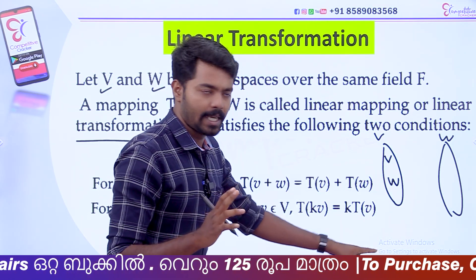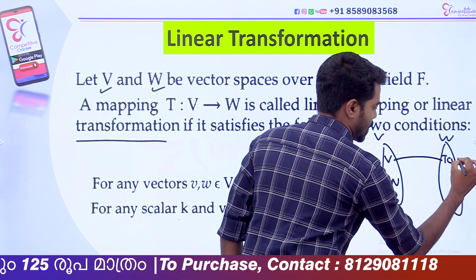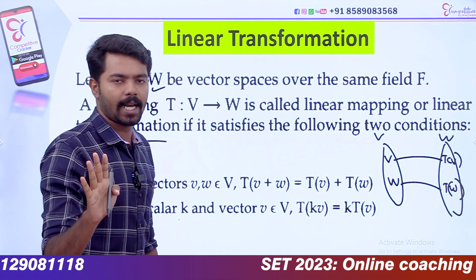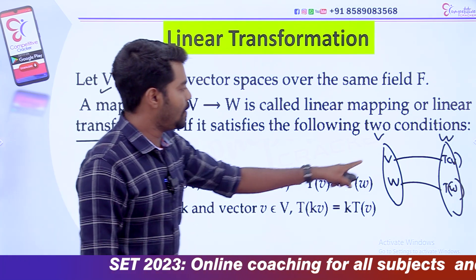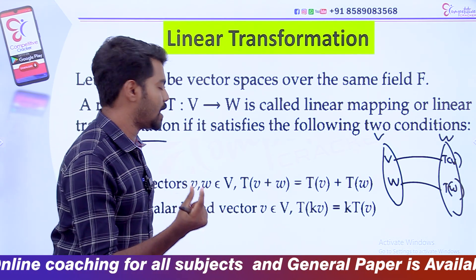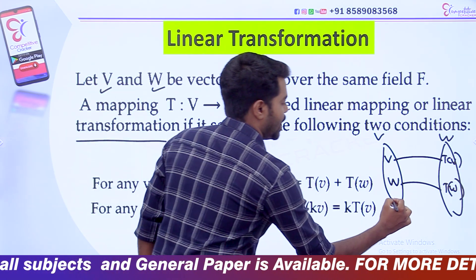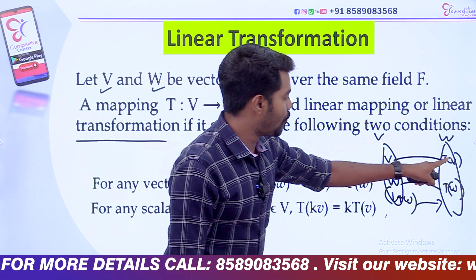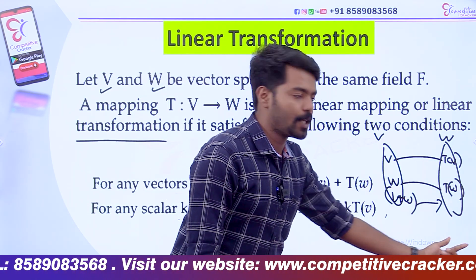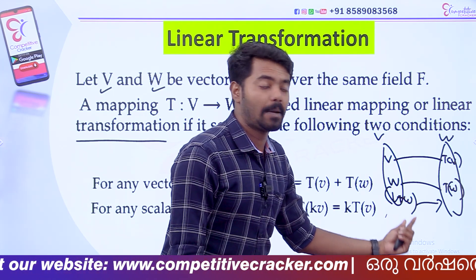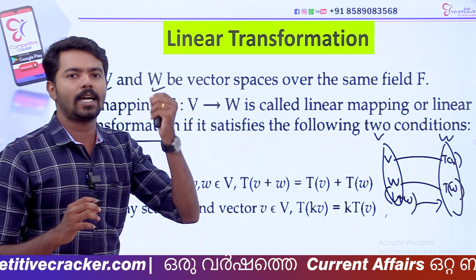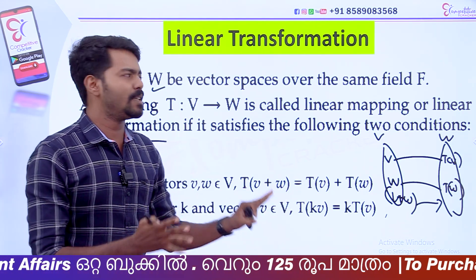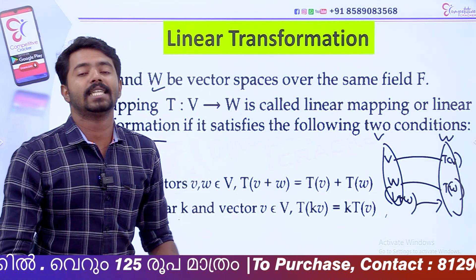There is an element, there is an image. It is called t of v. What is the image of t of w? These two elements v and w, we call v plus w. What is the image of t of v and t of w? We call t of v plus t of w. What is the image of t of v plus w? The term is a linear transformation.